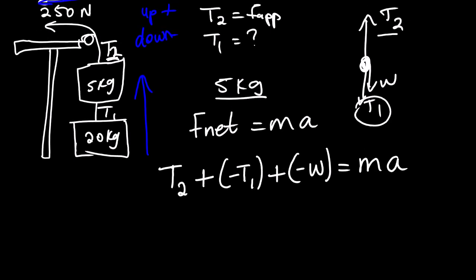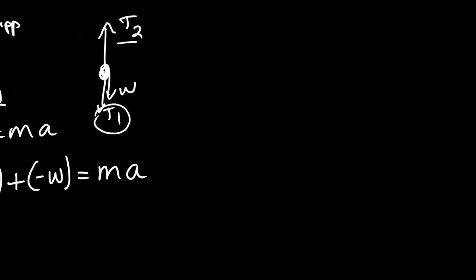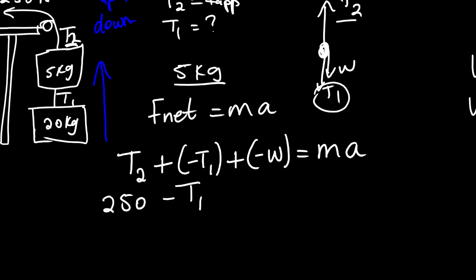From here, since we said T2 is the same as force applied, since we are applying force on tension 2, so T2 is 250 newtons minus T1. Remember weight, weight is FG, weight is equals to MG. So since we have the mass, the mass is 5 multiplied by 9.8 meters per second squared. So we can substitute here: 5 multiplied by 9.8. It's equals to the mass, we are still focusing on the 5 kg block, so it's 5a.